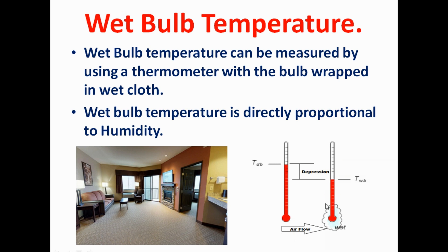When our surrounding air has 100% relative humidity, there will be no evaporation of water from the wet cloth, and when there is no evaporation, there will be no cooling effect on the bulb of this thermometer. So in such condition, the wet bulb temperature will become equal to the dry bulb temperature and this depression will become zero.